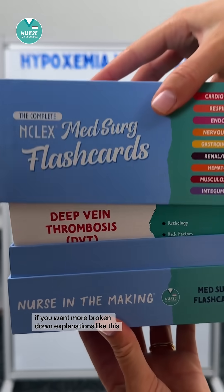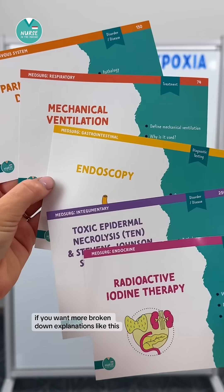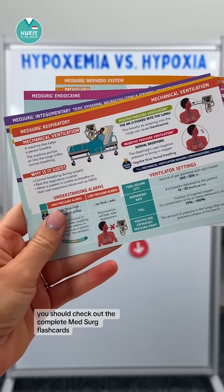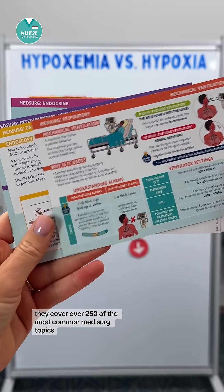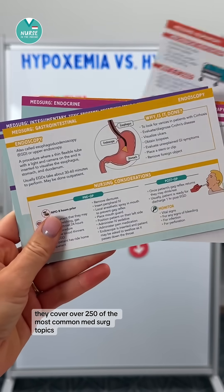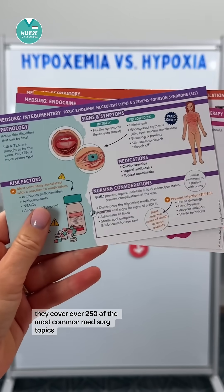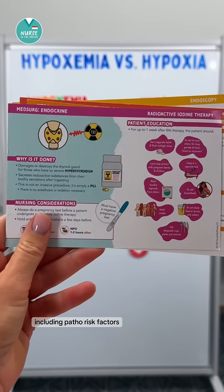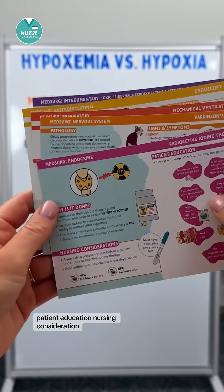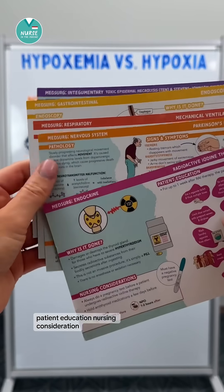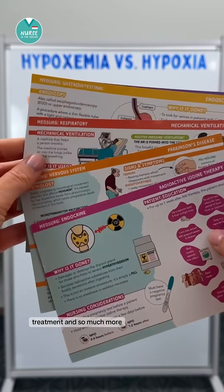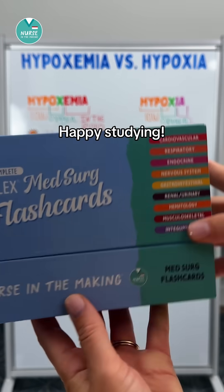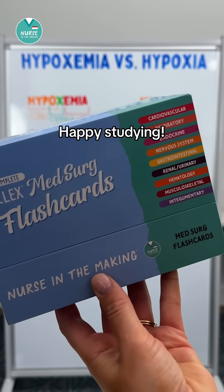If you want more broken-down explanations like this, you should check out the complete med-surge flashcards. They cover over 250 of the most common med-surge topics including patho, risk factors, patient education, nursing considerations, treatment, and so much more. You can find them on my shop, Nurse in the Making. Happy studying, future nurses.